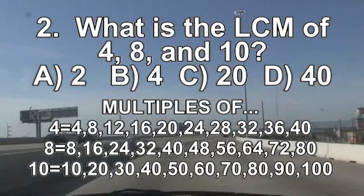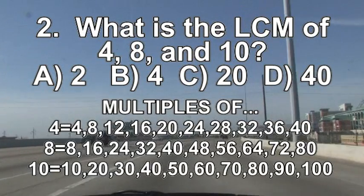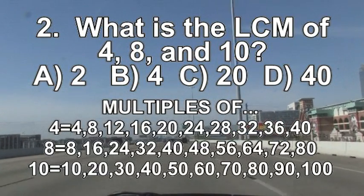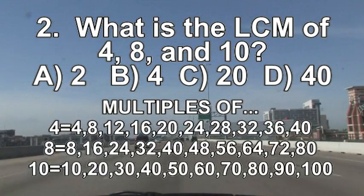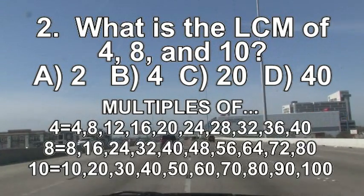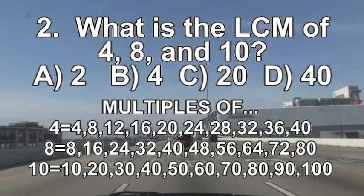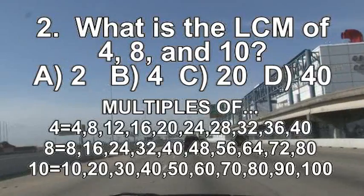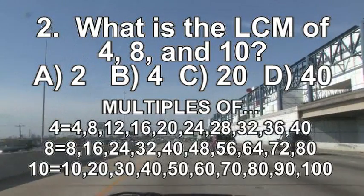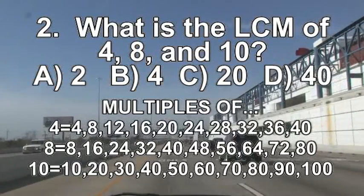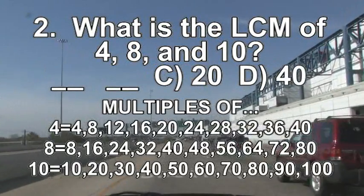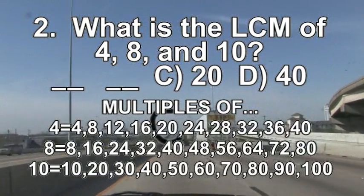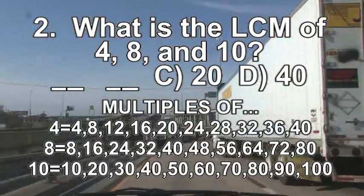You should have the following list of multiples on your paper. Now look at your answer choices — two of them are obviously wrong. The multiples of 10 start with 10, so any answer choice smaller than 10 cannot possibly be correct. Two is actually the GCF of 4, 8, and 10. Of the choices left — 20 and 40 — 20 appears in the multiples of 4 and 10, but not the multiples of 8.